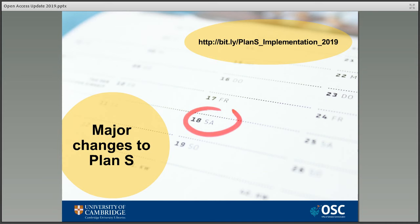There was quite a big reaction — not all of it positive — when the plan was first launched, and Coalition S, who are the funders behind the plan, called for feedback to help move things forward. The feedback period was open from November 2018 to February 2019 and gathered over 600 responses, which have now been collated and released. I'm going to outline some of the main points and the changes to the plan.